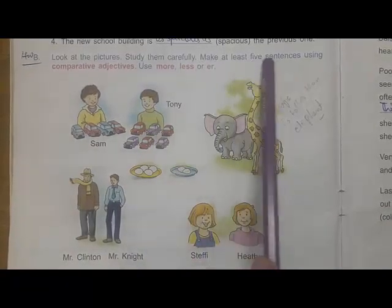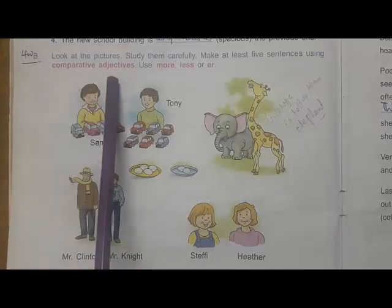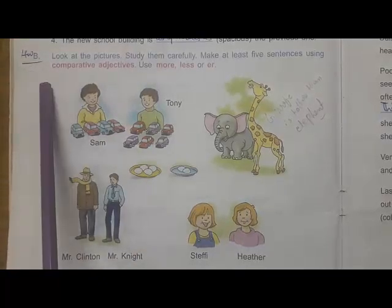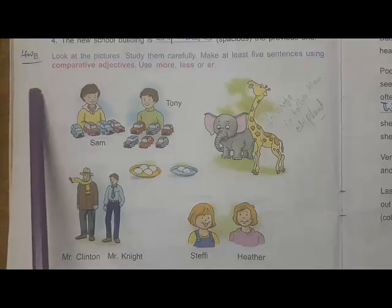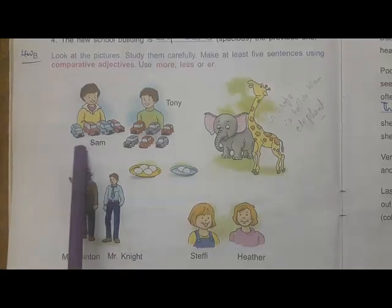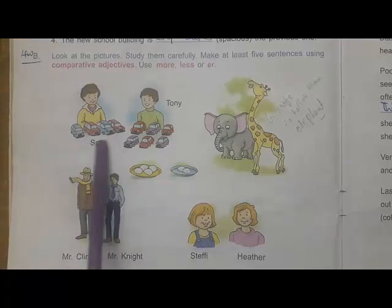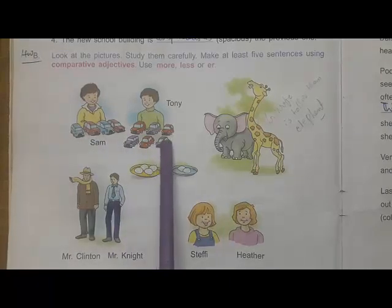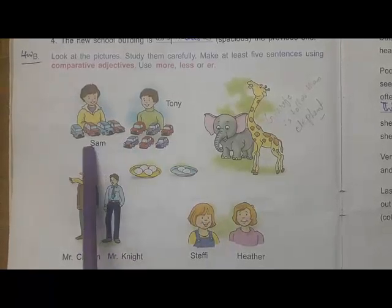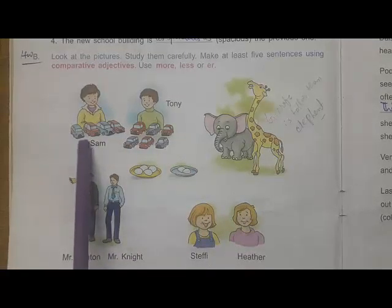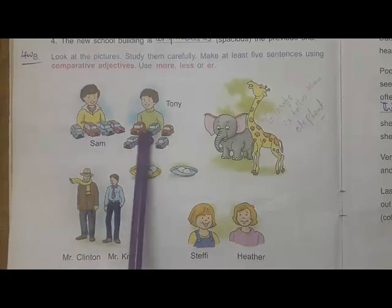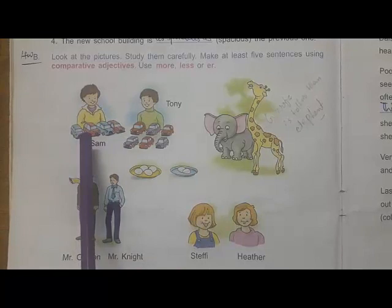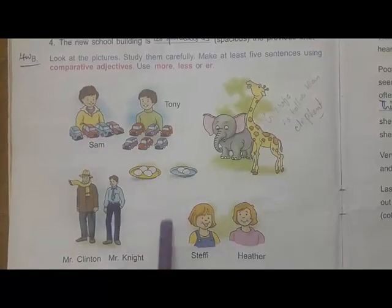You have to carefully make at least five sentences using comparative adjectives from the picture. This is homework — you have to do this exercise in your copies. I'm going to do one for you to make it clear. In the picture, Sam has four cars and Tony has six cars. So you make sentences like: 'Sam has fewer cars than Tony.' 'Tony has more cars than Sam.' In this way you can make sentences.